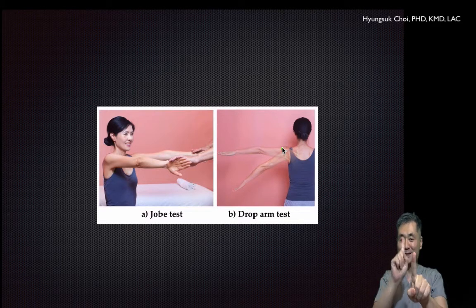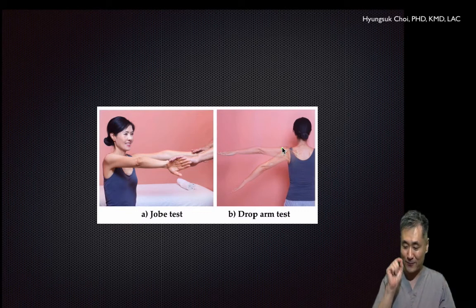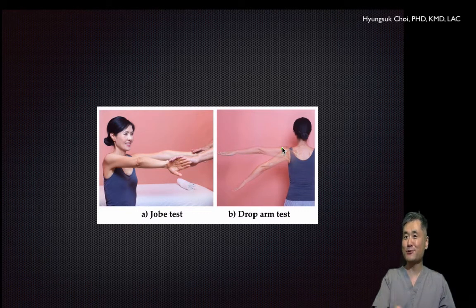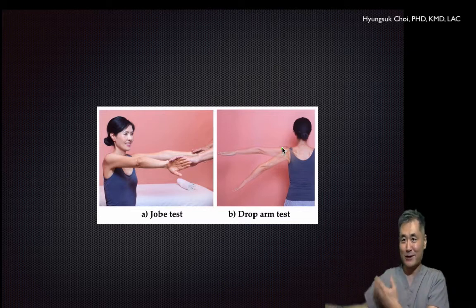But the drop arm test has amazingly high specificity. So when a patient shows a positive sign on the drop arm test and cannot hold their arm, the patient definitely has significant supraspinatus pathology. That is the difference between the two virtues: sensitivity and specificity.